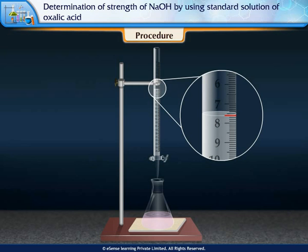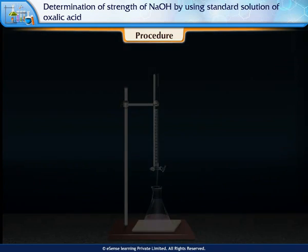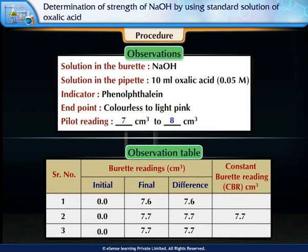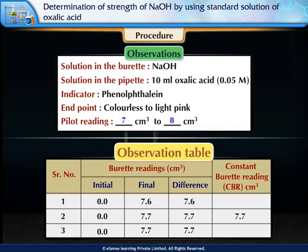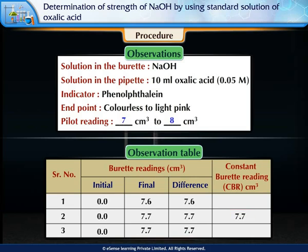Note the final reading in your observation table. Repeat the titration at least twice to obtain a constant burette reading. The constant burette reading obtained is 7.7 cm³.